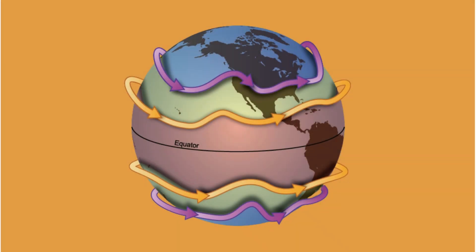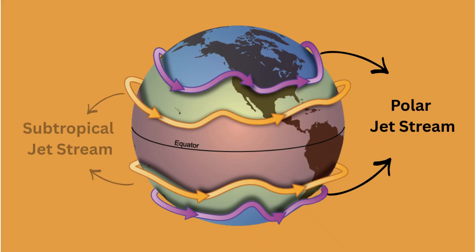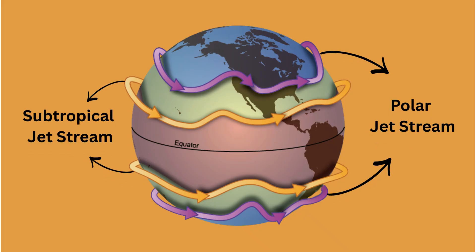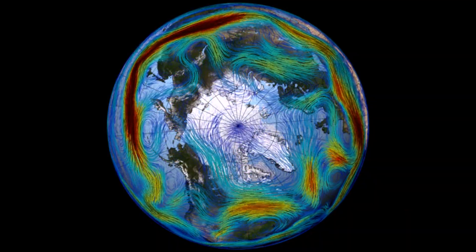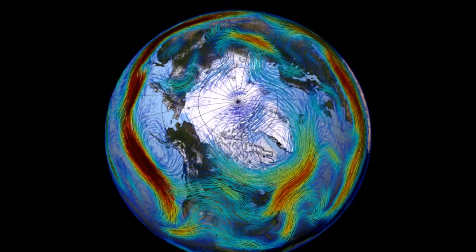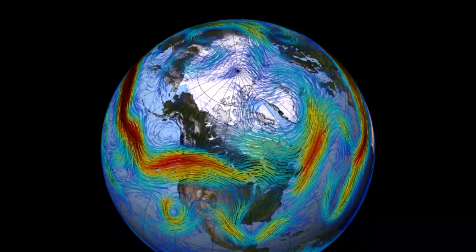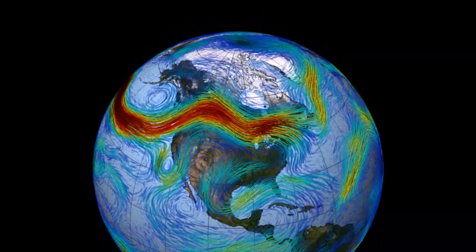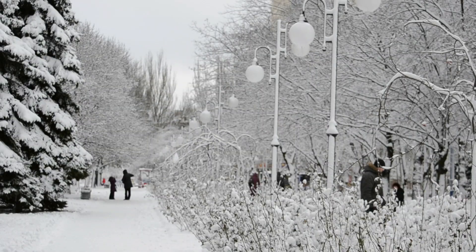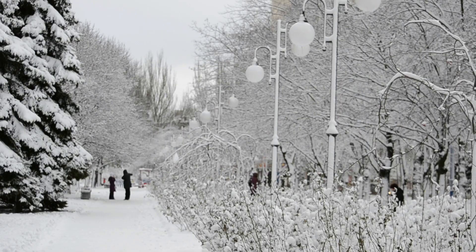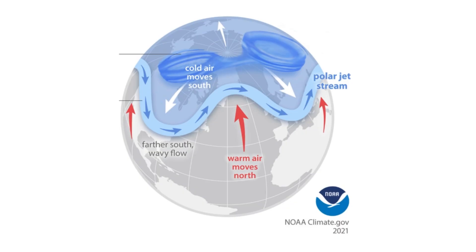There are four major jet streams on our planet: a polar jet and a subtropical jet in each hemisphere. In the northern hemisphere, the polar jet stream is the most influential for everyday weather. It usually flows around 60 degrees north, and marks the boundary between cold arctic air and milder mid-latitude air. This jet stream strongly controls winter weather in the United States, Canada, and Europe. When it dips south, cold air can pour into populated regions. When it shifts north, milder conditions dominate.